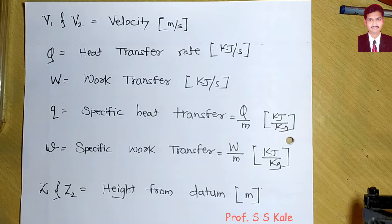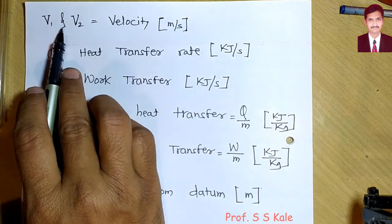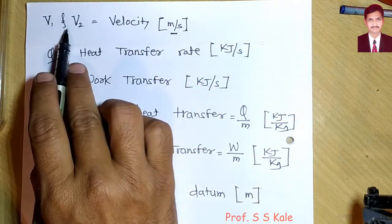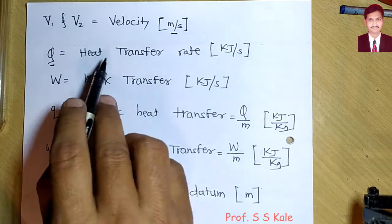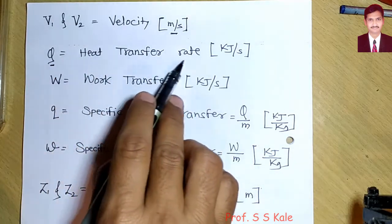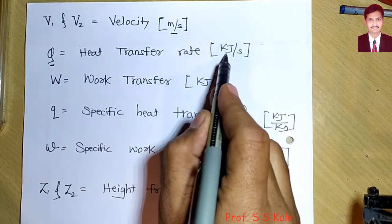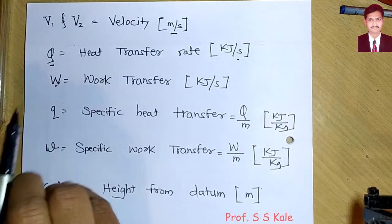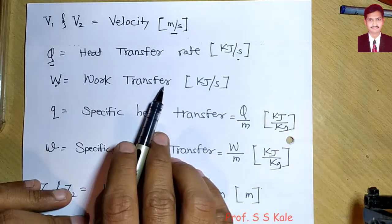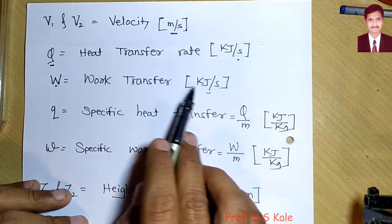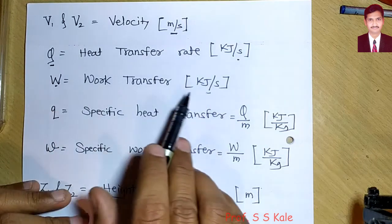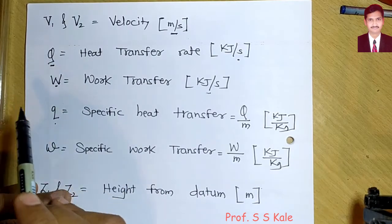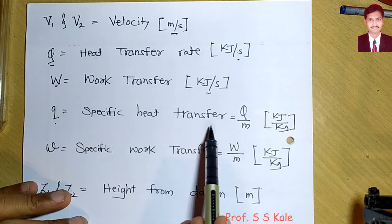V1 and V2 are velocities at inlet and outlet in m/s. Q is heat transfer rate measured in kJ/s, and capital W is work transfer rate also measured in kJ/s.